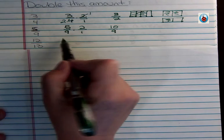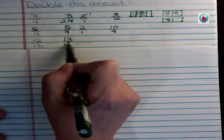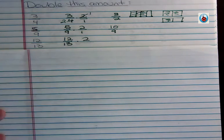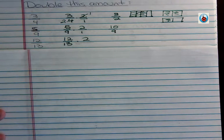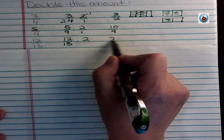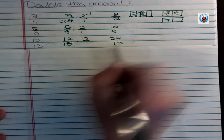What do you think twelve thirteenths would be doubled? Hopefully you can see that I can't cut that thirteen in half nicely. So it's going to be twenty-four thirteenths.